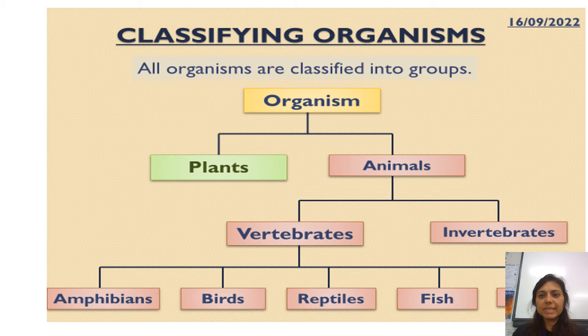Animals can be classified as vertebrates or invertebrates. If it's a vertebrate, that means it has a backbone, and invertebrate animals do not have a backbone.